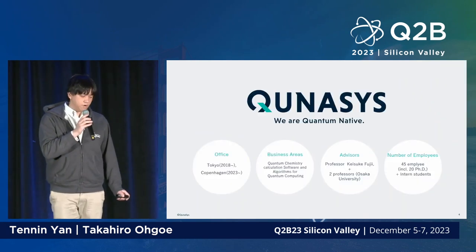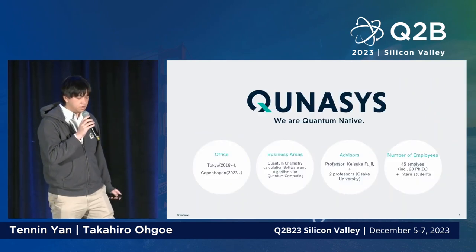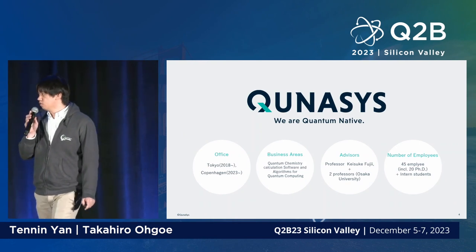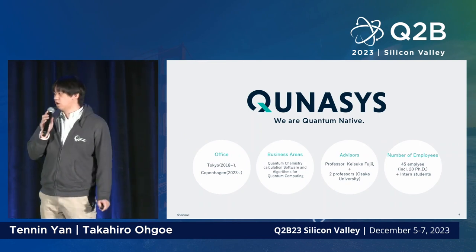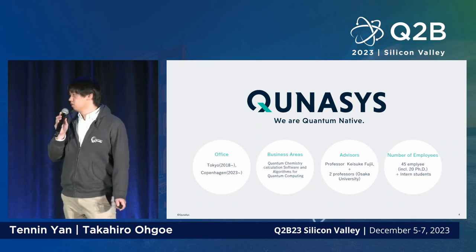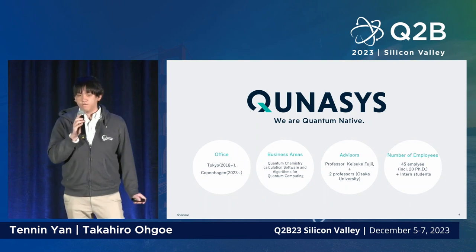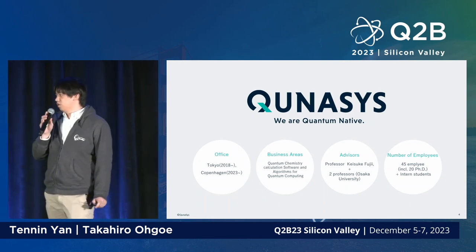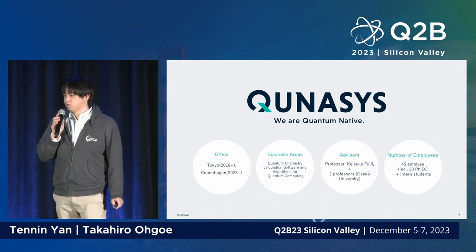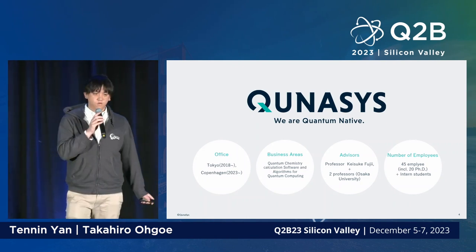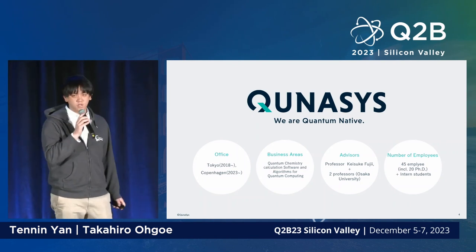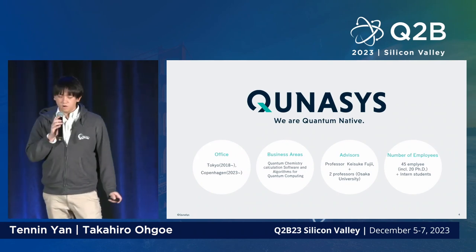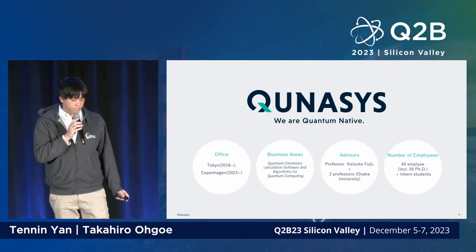Just a quick introduction about our company. We are a company founded in 2018 in Tokyo, Japan, and recently we opened our office in Copenhagen. We focus on quantum chemistry calculations using quantum computers, and we were founded with Osaka University professors. We currently have 45 members.